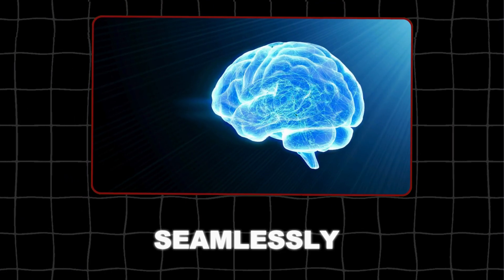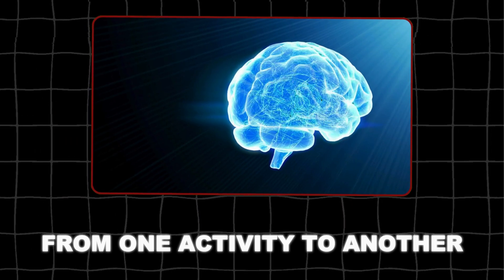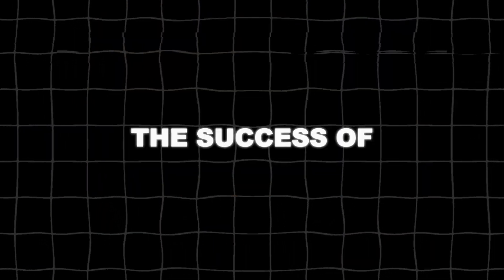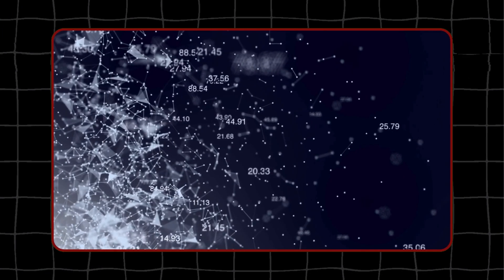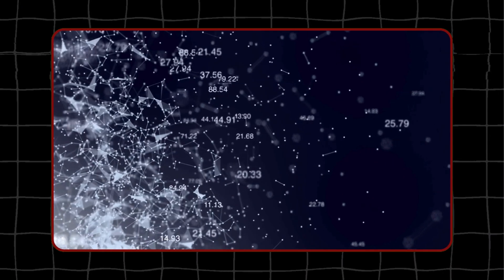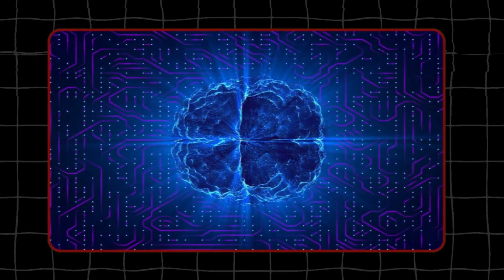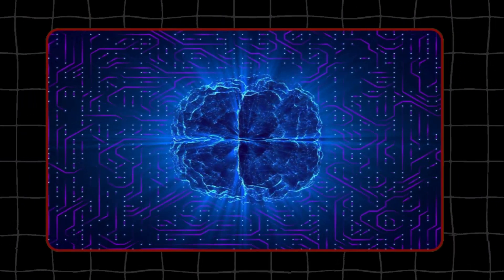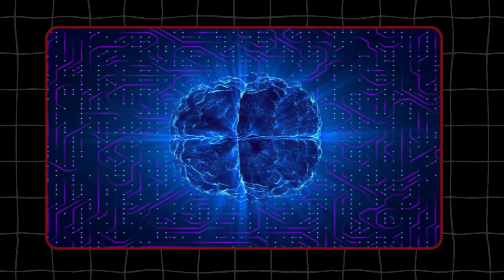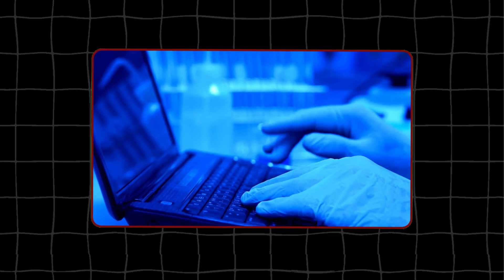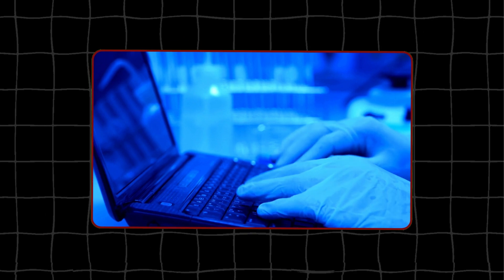The virtual brain moved seamlessly from one activity to another, adjusting its neural patterns in ways similar to live animals. The success of the virtual brain in replicating these complex neural dynamics opens up exciting possibilities for future research. It provides a powerful tool for exploring how brains generate and control diverse behaviors. By studying the virtual brain, scientists can gain insights into the underlying mechanisms of brain function.